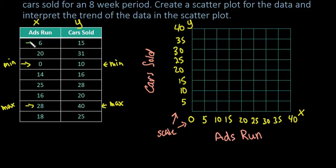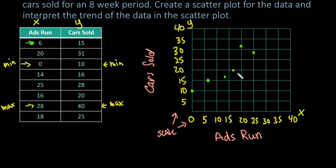Now it's just a matter of going through and plotting your pairs of points. I'd go to 6 on X and 15 on Y and put a dot; 20 on X and 31 on Y; 0 on X and 10 on Y; 14 on X and 16 on Y; 25 on X and 28 on Y; 16 on X and 20 on Y; 28 on X and 40 on Y; and finally 18 on X and 25 on Y. Make sure you have all your points — we have 8 points total, so all our data is there.